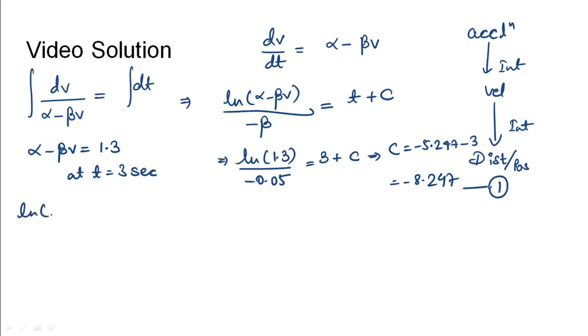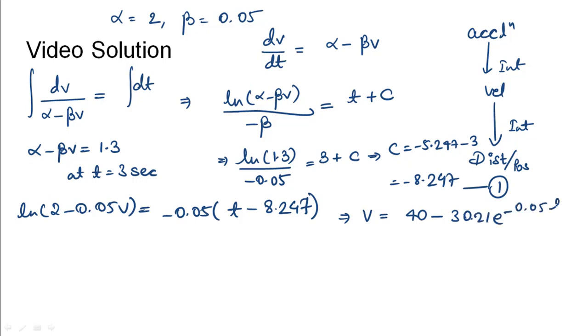From this we will get, ln of alpha has been given in the problem as 2 and beta is given as 0.05. So ln of 2 minus 0.05 v is equal to minus 0.05 into time plus c. C was obtained as minus 8.247. Using this, we would have the expression of v as 40 minus 30.21 e power minus 0.05 t.